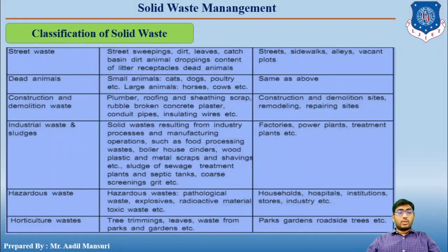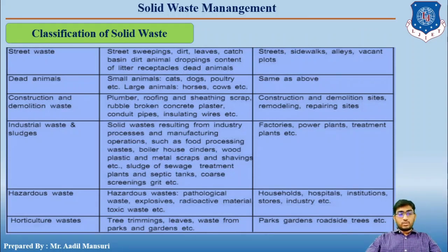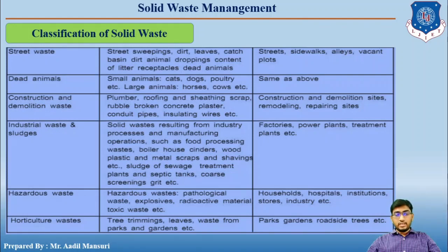Street waste includes street sweepings, dirt, leaves, catch basin dirt, animal droppings, and contents of litter receptacles. Sources include streets, sidewalks, alleys, and vacant plots. The classification also covers dead animals, construction and demolition waste, industrial waste, hazardous waste, and horticulture waste — meaning tree trimmings, leaves, and waste from parks, gardens, and roadside trees.